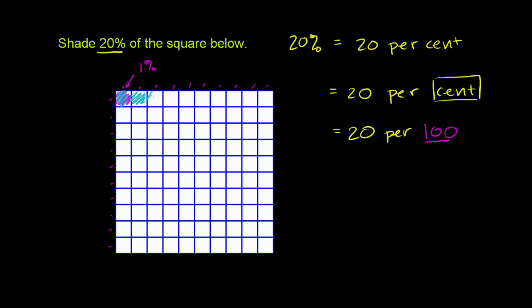we'd do 1, 2, 3, 4. Actually, if we shade this entire row, that will be 10%, right? 1, 2, 3, 4, 5, 6, 7, 8, 9, 10.